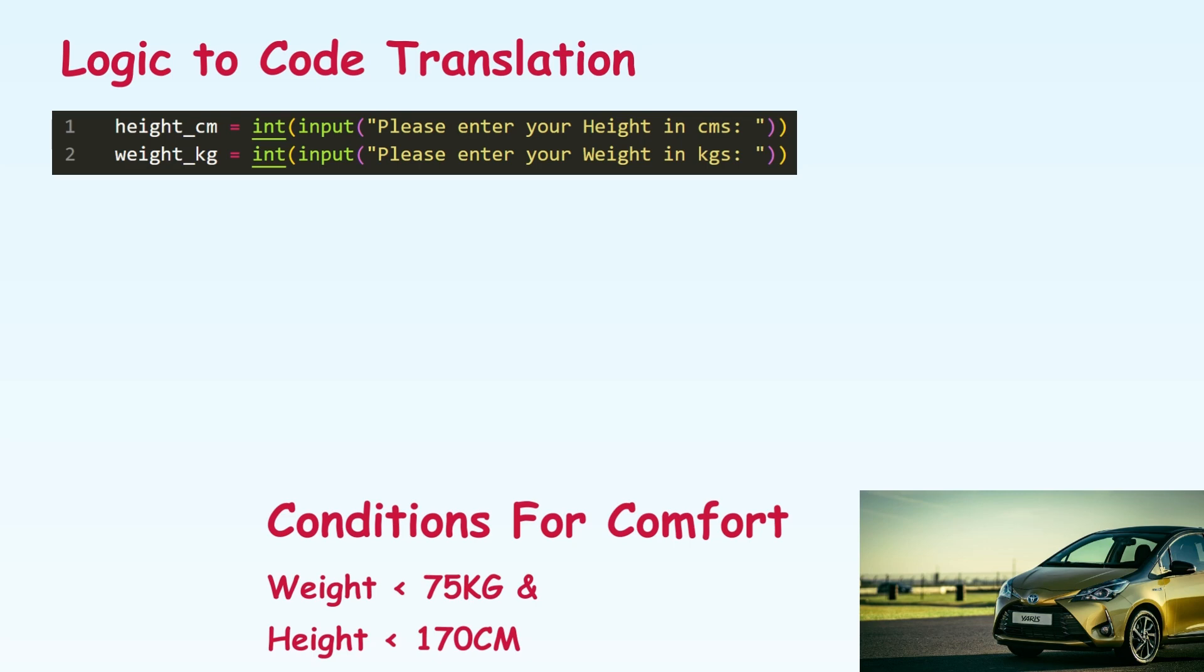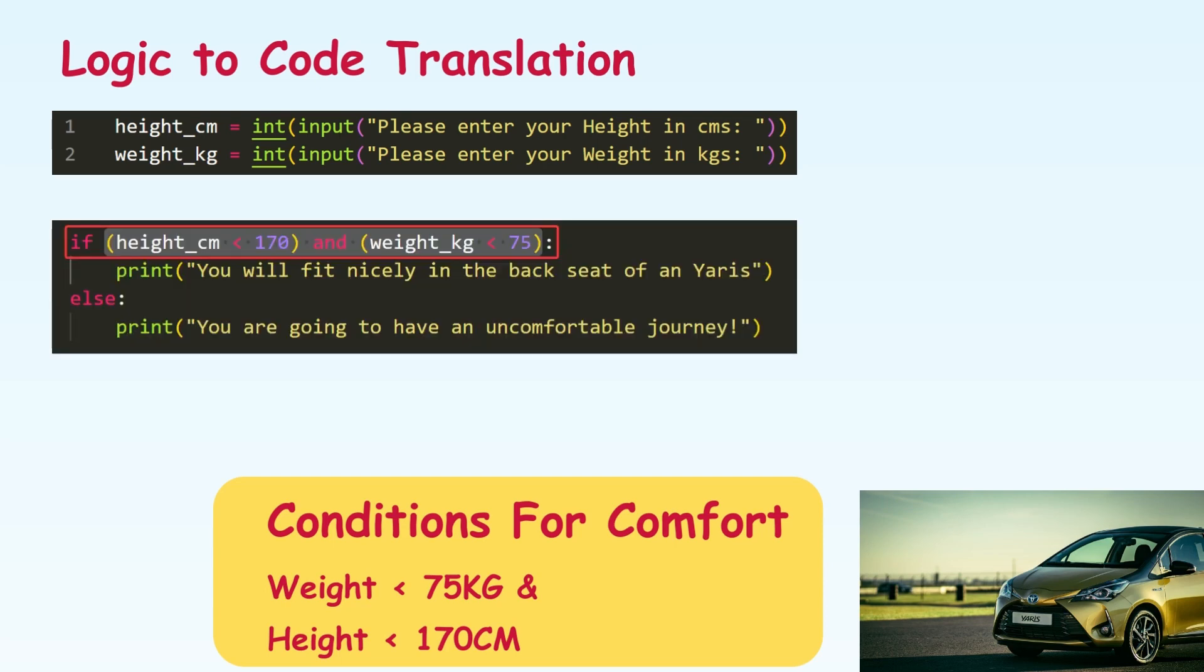How can we check this particular condition in Python? Like I said, Python code reads like plain English. We simply write if height is less than 170 and weight is less than 75. Looks so simple doesn't it? But does it work? Let's run it and see shall we?